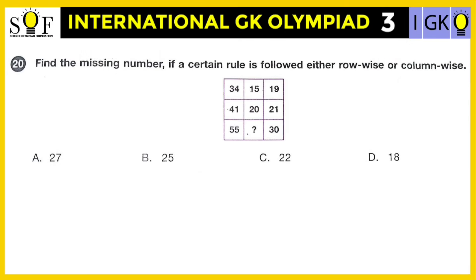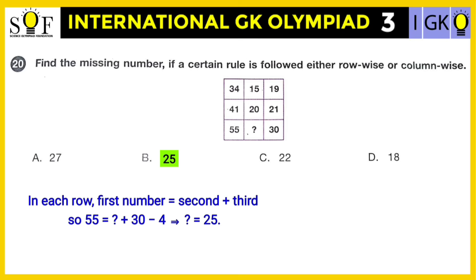Question number twenty: Find the missing number if a certain rule is followed either row-wise or column-wise. The correct answer is 25. In each row, the first number is the sum of the second and third numbers — like 15 plus 19 is 34, 20 plus 21 is 41, so 25 plus 30 is 55.